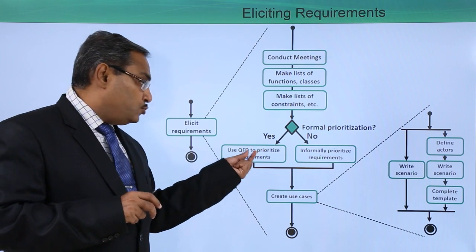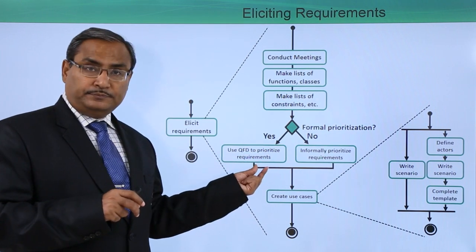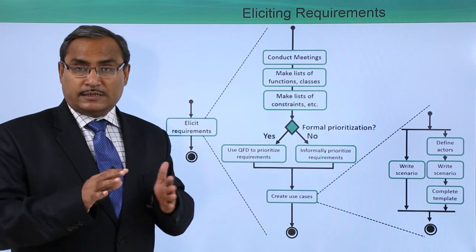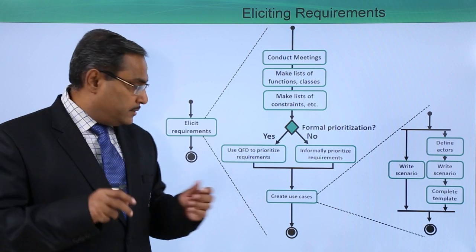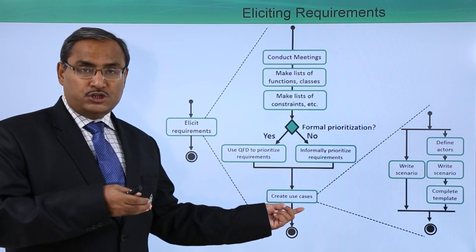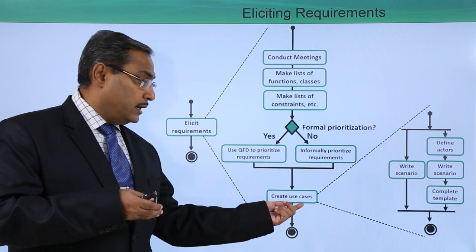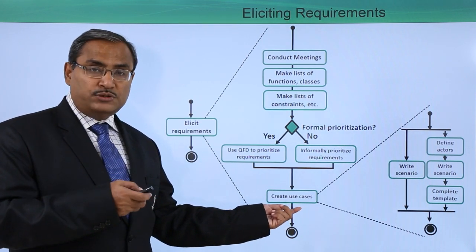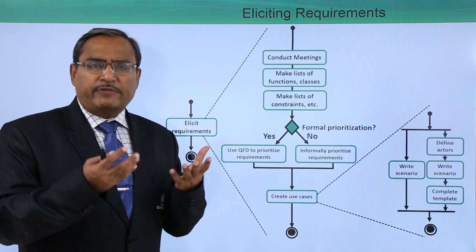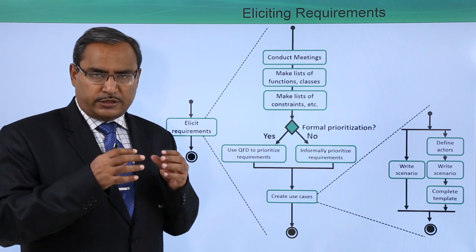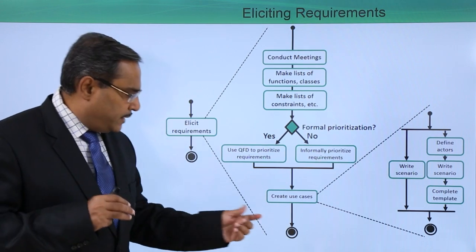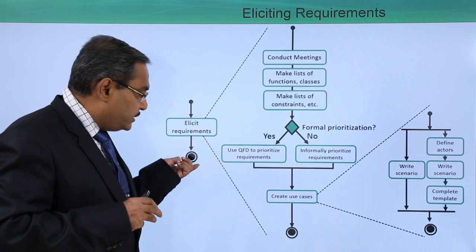After listing functions and constraints, the diagram includes a formal prioritization decision: yes or no. If yes, use QFD (Quality Function Deployment) to prioritize the requirements; if no, informally prioritize the requirements. Then the process moves to creating use cases, which represent functional requirements. For each use case, one process has to be generated representing one functional requirement of the software.